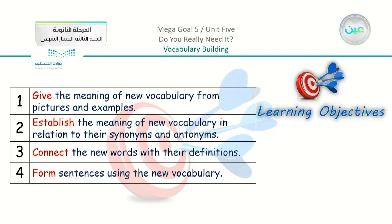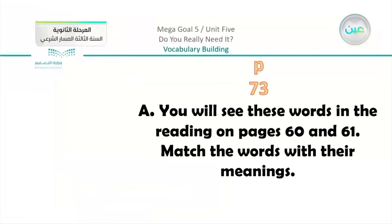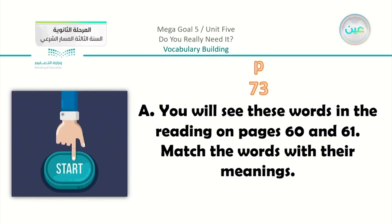Our objectives today are: number one, to give the meaning of new vocabulary from pictures and examples; number two, to establish the meaning of new vocabulary in relation to their synonyms and antonyms; number three, to connect the new words with their definitions; and number four, to form sentences using the new vocabulary. We are going to read the meaning, relate it to our previous background, go through the meaning in context, discuss with classmates, and get hints from pictures, synonyms, antonyms, and explanation. Open your books to page 73.